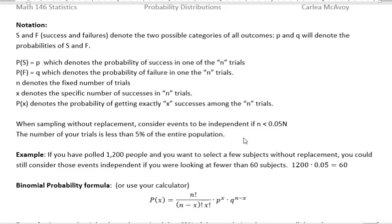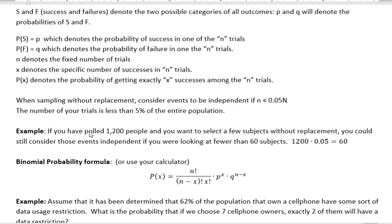Here's an example of that. If you have polled 1,200 people, and you have some data based on these 1,200 people, and you want to select a few of those subjects without replacement and look at them, you could still consider those independent if you were looking at fewer than 60 people, because 1,200 times 5% is 60. So as long as the number of people you're looking at is less than 60, we can still say that those are independent events.